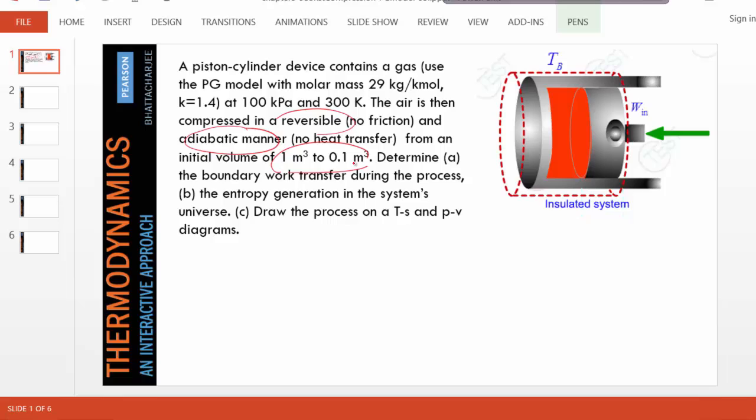We have solved exactly the same problem in chapter 3, the material model module. If you go there and look under the PG model, you'll find we solved an identical problem where the question was find the final temperature, final pressure, etc. So we will use those numbers that we already calculated in solving this particular problem.